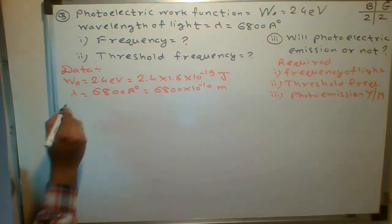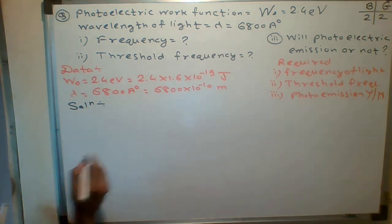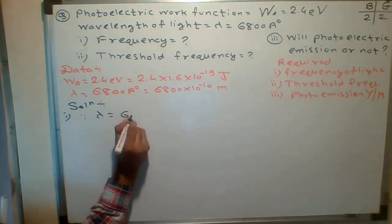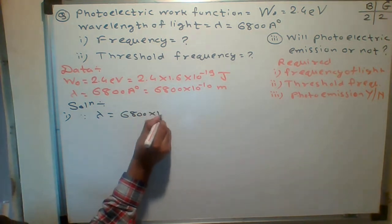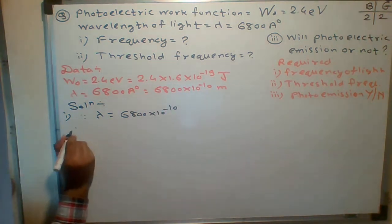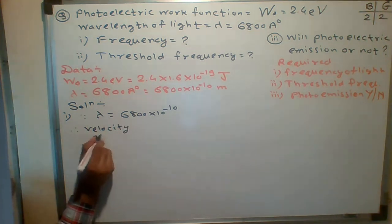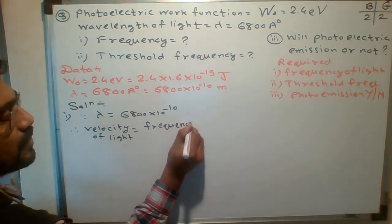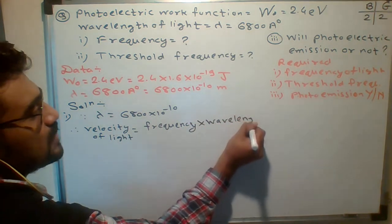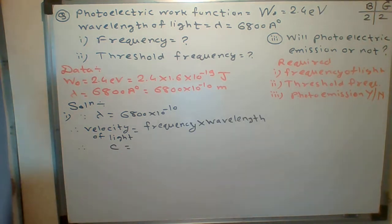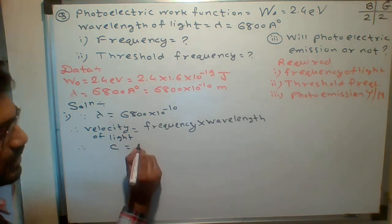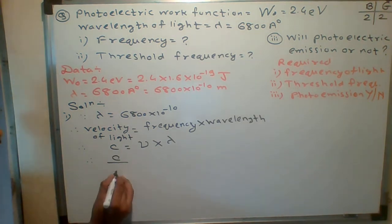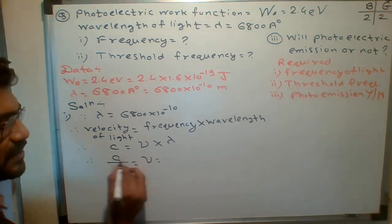Let's find the frequency of light first. The wavelength of light is 6800 into 10 to the minus 10 meters. The general formula for velocity of light is: velocity equals frequency multiplied by wavelength — that is, c = ν × λ. The velocity of light is represented by symbol c. To find frequency, the formula is ν = c upon λ.